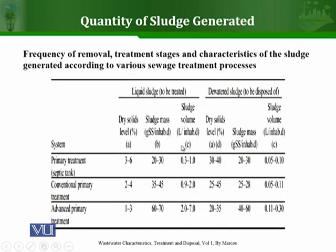You can also see the quality of the sludge and its different parameters. For liquid sludge produced before dewatering, the dry solids level, sludge mass, and sludge volume are given in the table, and these values change once the sludge is dewatered. To dispose of sludge, we first have to apply treatment processes to make disposal easy, and one of those processes is dewatering of the sludge.